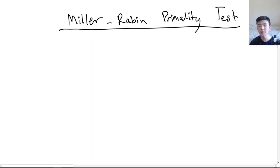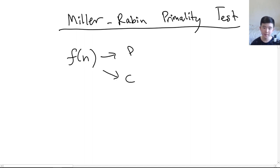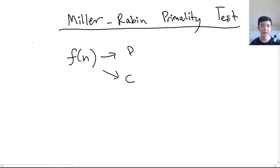Hello! In this video I'll be explaining how to find if a number is prime using the Miller-Rabin primality test. A primality test is a function that takes in a positive integer n and tells us whether that integer is prime or composite. This has many applications, for example in cryptography where we have to find very large prime numbers.